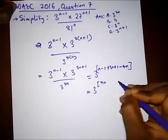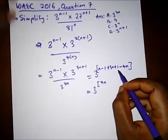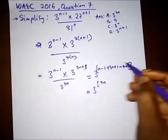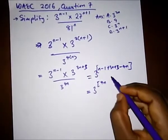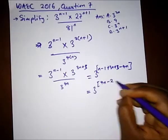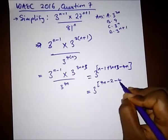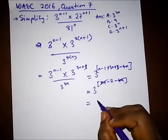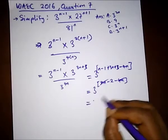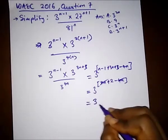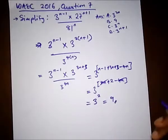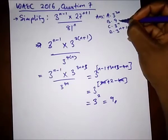So n minus 1 plus 3n plus 3 gives us 4n plus 2 in the numerator. Bringing the denominator up gives minus 4n, so 4n minus 4n cancels and we are left with 3 raised to the power of 2, which equals 9. Our correct option here is option B.